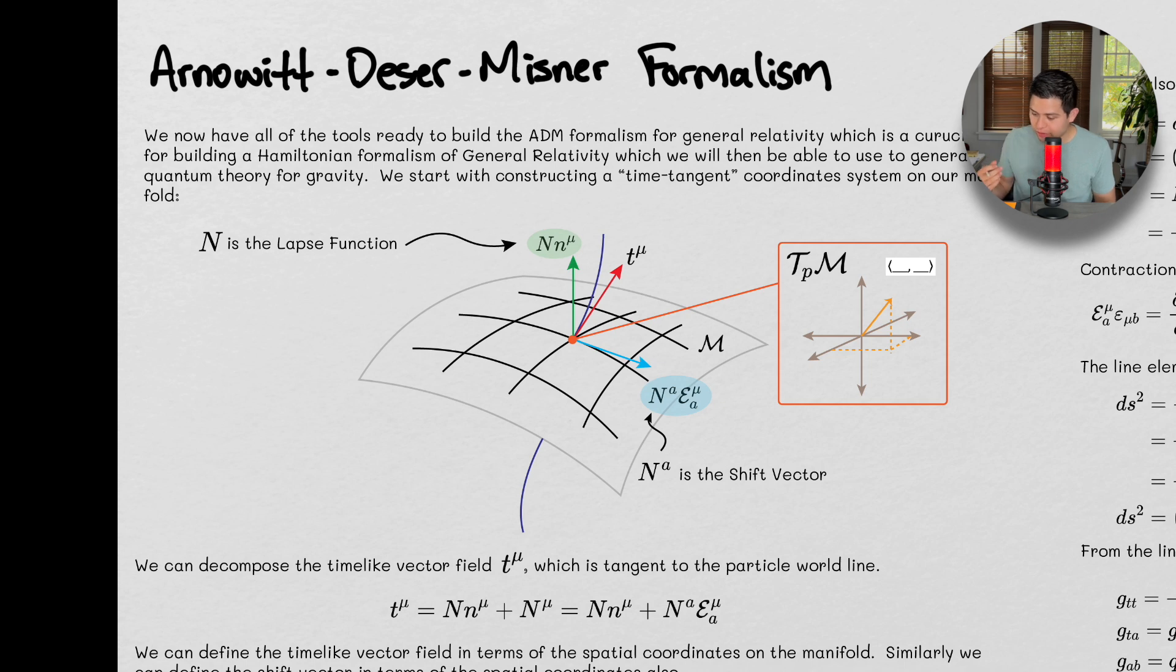So we are now going to deal with the Arnaud-Desert-Meisner formalism. These are three guys who are very important to general relativity. Maybe we can go over them historically in another video, but today we're going to go over the math of this formalism. We're going to not go too deep into it because this itself could be its own course.